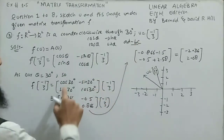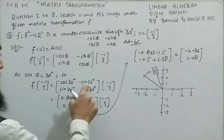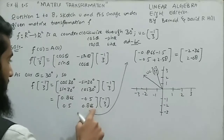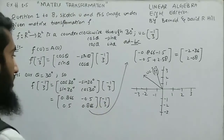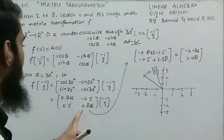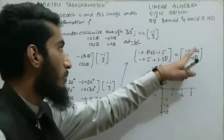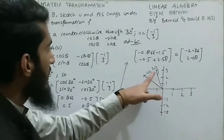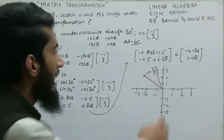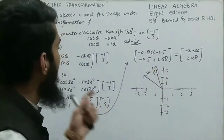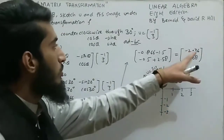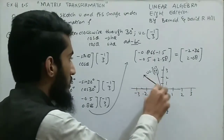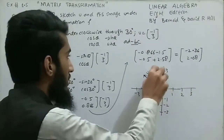Substituting θ = 30°: cos 30° = 0.866, sin 30° = 0.5. So A = [[0.866, -0.5],[0.5, 0.866]] multiplied by u = (-1,3). Multiplying these two matrices gives the result (-2.36, 2.08). The original u = (-1,3) is plotted in the plane, and the image (-2.36, 2.08) is the required image.